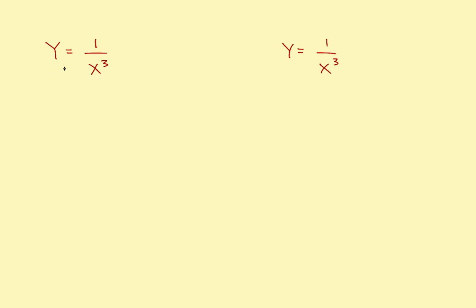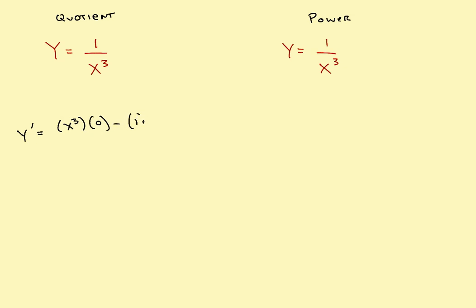Let's take a look at another example showing two separate solutions. A lot of times you can solve the same problem more than one way. First we'll use the quotient rule, and then we'll try the power rule, and we should get the same answer. Using the quotient rule, it would be the denominator times the derivative of the numerator — but the derivative of the constant is 0 — minus the numerator times the derivative of the denominator, all divided by the denominator squared.